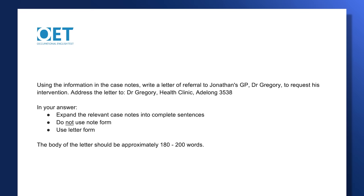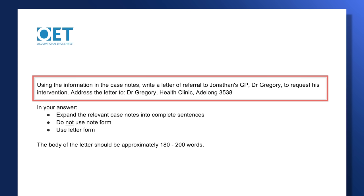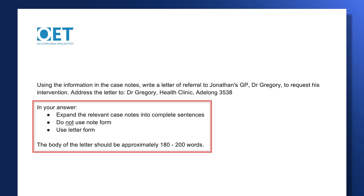Our task says: using the information in the case notes, write a letter of referral to Jonathan's GP, Dr. Gregory, to request his intervention. Address the letter to Dr. Gregory, Health Clinic, Adalong 3538. The last part is the same for every OET writing test — expand the relevant case notes into complete sentences, do not use note form, use letter form. Reading the task first helps us focus on who we are writing to and what we are asking them to do.